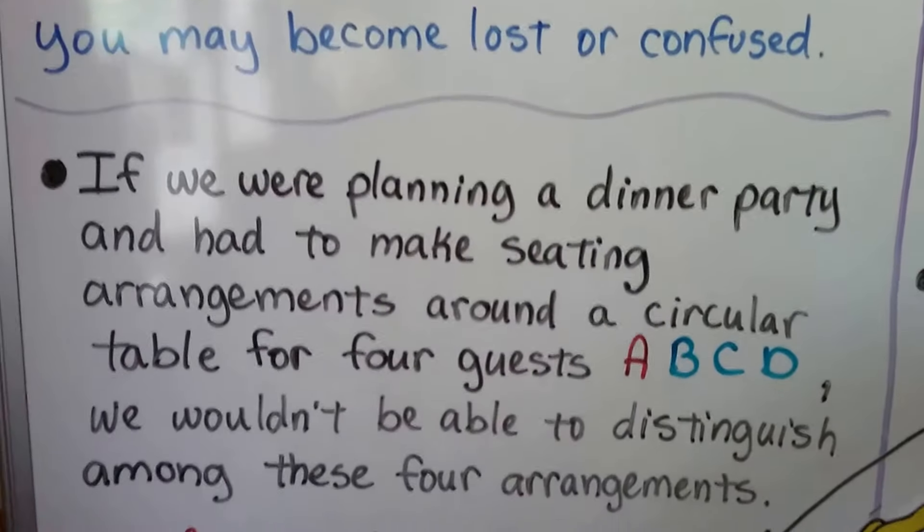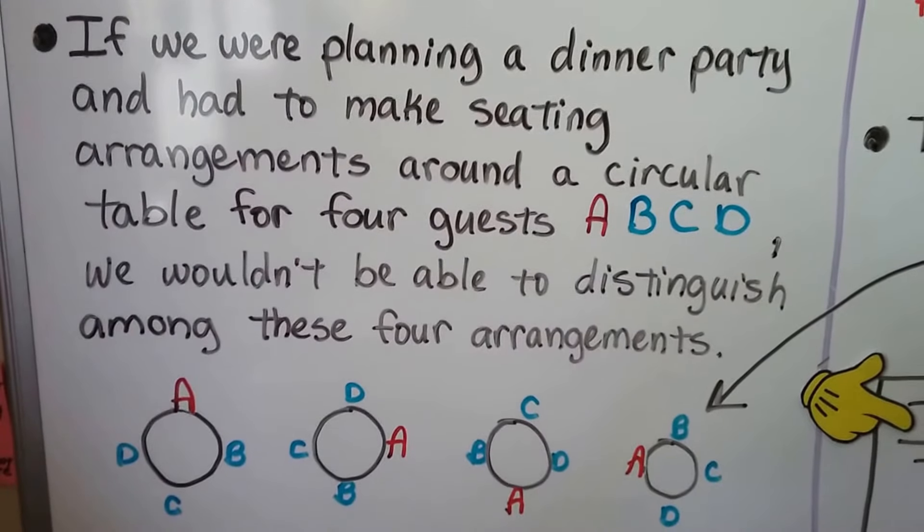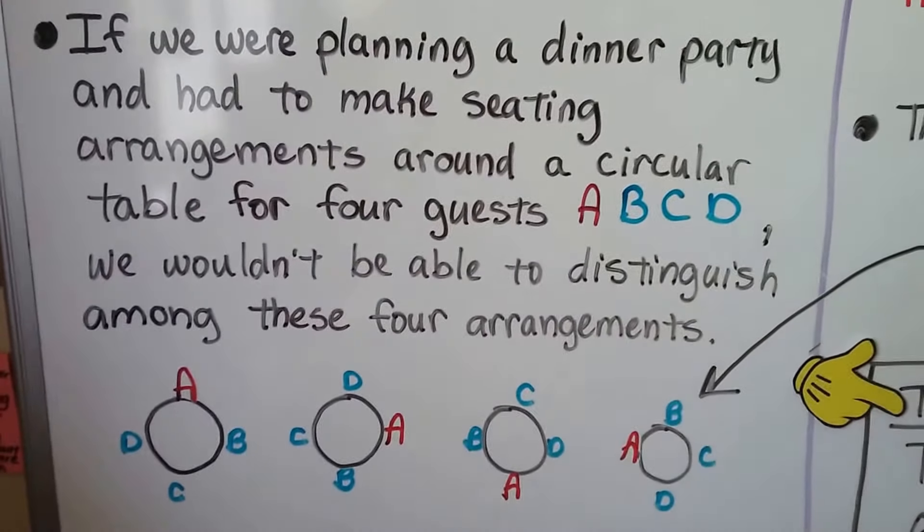If we were planning a dinner party and had to make seating arrangements around a circular table for four guests, A, B, C, D, we wouldn't be able to distinguish among these four arrangements.